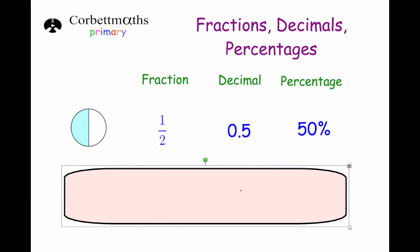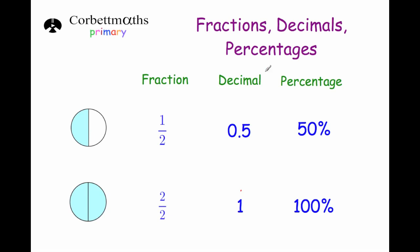Now let's have a look at two halves. This diagram represents two halves because both halves are shaded in. As a fraction that would be 2 over 2. As a decimal number, that's a whole because all of it is shaded in, so that's 1. And as a percentage that's 100%. Any time a fraction has the same number on the top as the bottom, that is one whole — so 3 thirds, 4 quarters, or 5 fifths would all be a whole.